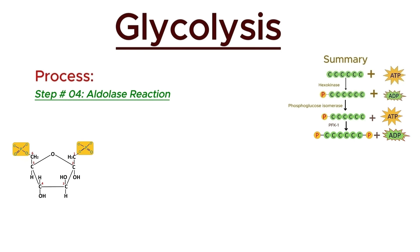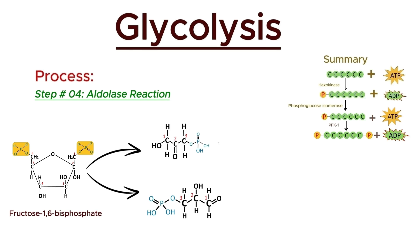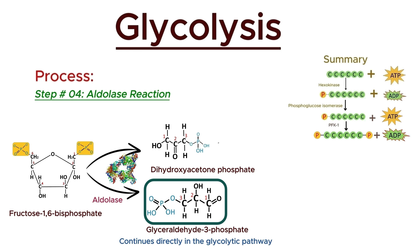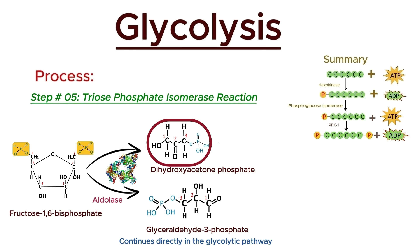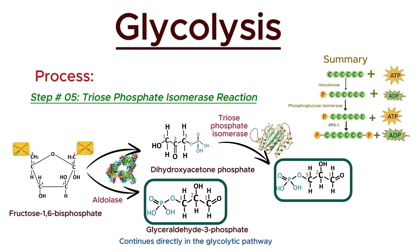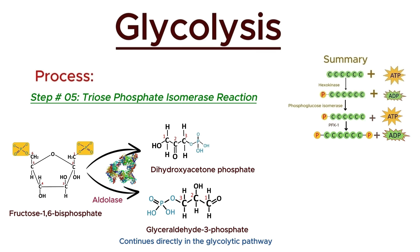In the fourth step, the 6-carbon molecule fructose-1,6-bisphosphate is split into two 3-carbon molecules: glyceraldehyde-3-phosphate (G3P) and dihydroxyacetone phosphate (DHAP). This reaction is catalyzed by the enzyme aldolase, which performs this cleavage by breaking the bond between the third and fourth carbon atoms of fructose-1,6-bisphosphate. Only glyceraldehyde-3-phosphate continues directly in the glycolytic pathway. The other product, DHAP, is quickly converted into G3P by the enzyme triose phosphate isomerase, ensuring that both molecules produced in this step can be utilized in the pathway. At the end of this stage, we obtain two 3-carbon molecules, catalyzed by aldolase.